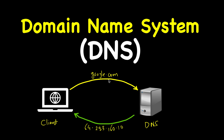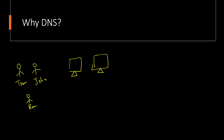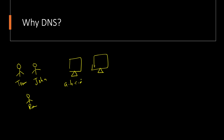First, before understanding the Domain Name System, we must understand why we need it. Why cannot we directly contact Google? We as humans communicate with each other by names — like Tom, John, or Ram. But computers, when they communicate with each other, only understand a number called an IP address.